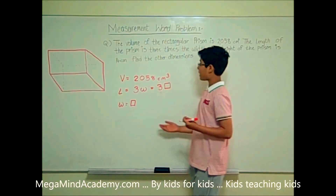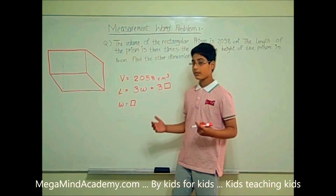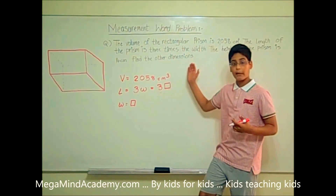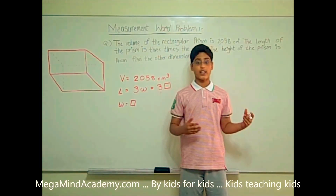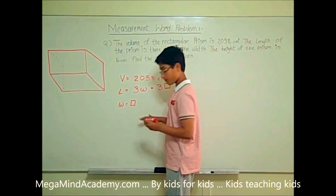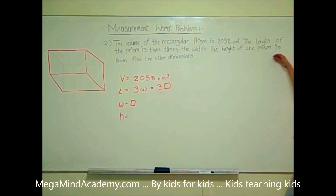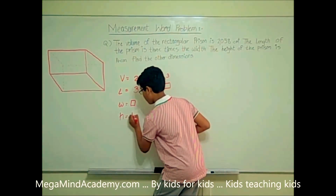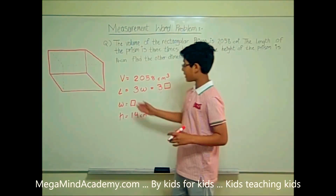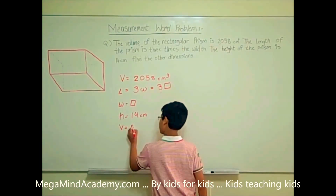In order to find the other dimensions, we need to find the area, because the other dimensions are the length and the width. Using the information given in the problem, we find the area and then find the length and the width. The height is equal to 14 centimeters. The volume is equal to the area times the height.